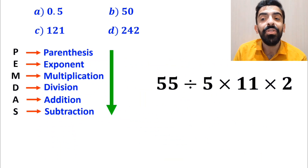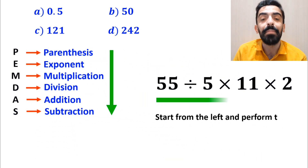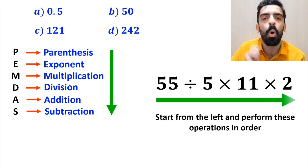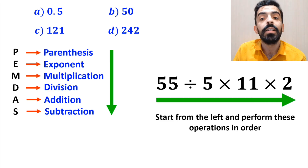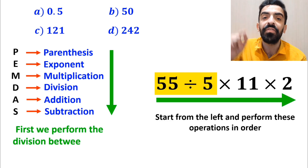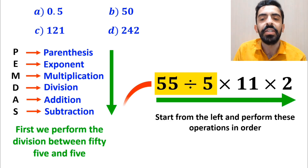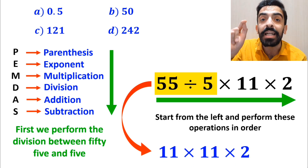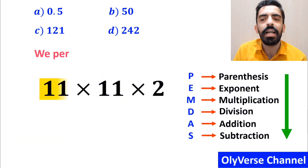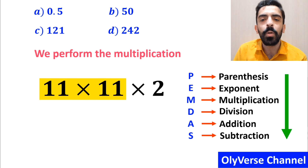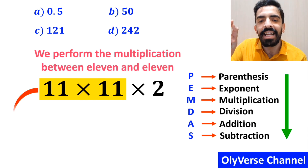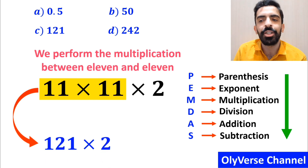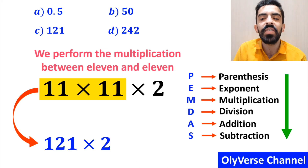The best thing to do is to start from the left and perform these operations in order. First we perform the division between 55 and 5, which simplifies the expression to 11 multiplied by 11 and again multiplied by 2. Then we perform the multiplication between 11 and 11, giving us 121 times 2, which finally gives us the answer 242.